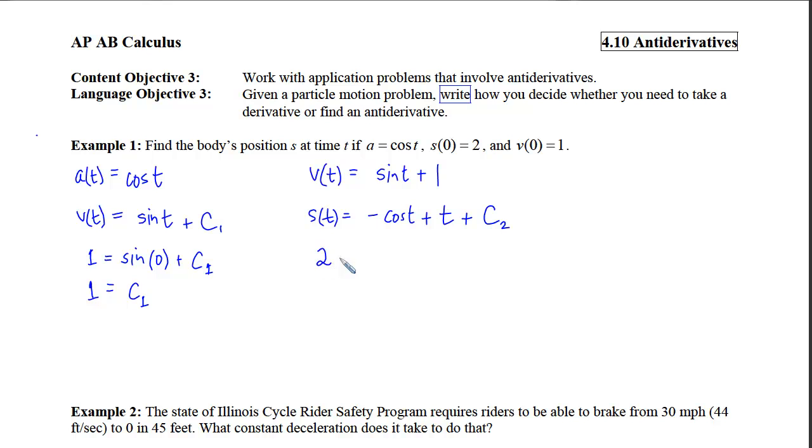So that means I'll have a 2 come out when I plug in a 0. Well, we know that cosine of 0 is 1, so this will be a negative 1 plus c sub 2. So c sub 2 will be 3. Once I have my constant, I can come back up and fill it in and get my position function at any time. It will be negative cosine of t plus t plus 3.